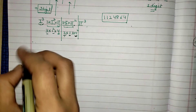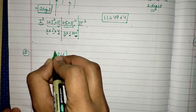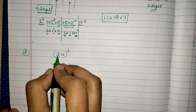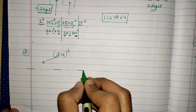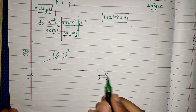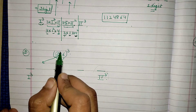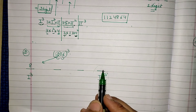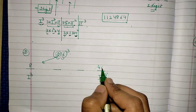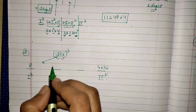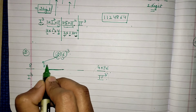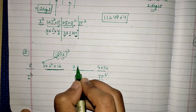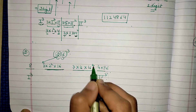Now let us take another example: the cube of 216. I divide it into two parts — my first number is 2 and my second number is 16. Cube of 2 is 8 and cube of 16 is 4096. For the second part I write 3 × 2² × 16 = 192, and for the third part I write 3 × 2 × 16².